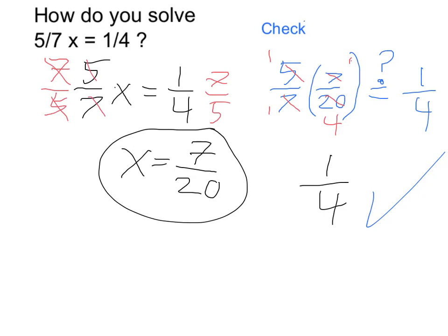So again, our trick to doing this whole thing was to, in the beginning step, multiply both sides by the reciprocal of the fraction we're multiplying x by.